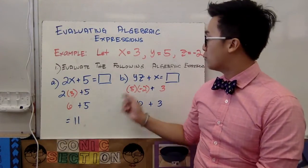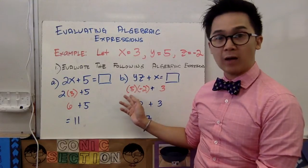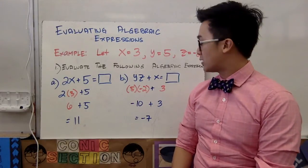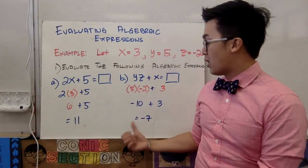By substitution, we are multiplying yz, which is 5 times negative 2, plus 3, and further simplifying our algebraic expression, we'll have negative 10 plus 3, which is equal to negative 7.